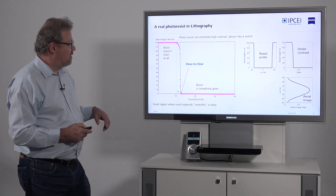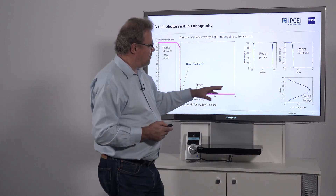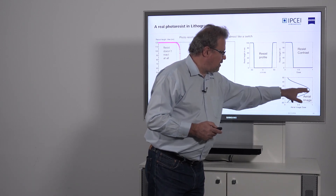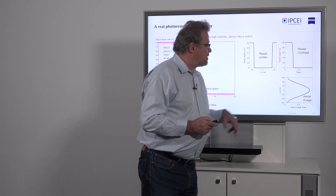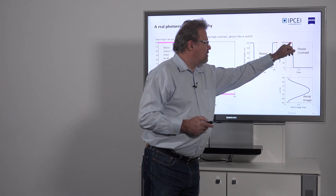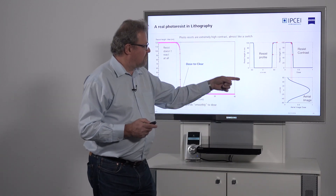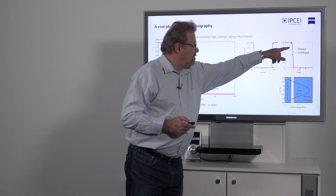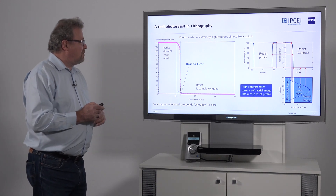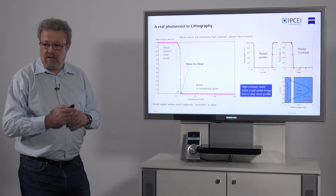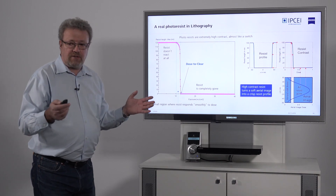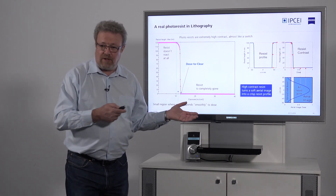This is the key to how resist profiles get sharp. Here you see the aerial image intensity, flipped 90 degrees — that's how the aerial image looks. That's the resist contrast curve. For each intensity value, on the same axis, you go up and look at what the resist thickness is. If you do this for different dose values, you can see how this contrast curve transforms the soft aerial image into a sharp resist profile. So this is a key element in making these devices work — not only optics, but also the chemistry. The chemistry actually deserves much more credit than I'm able to give it as a physicist.